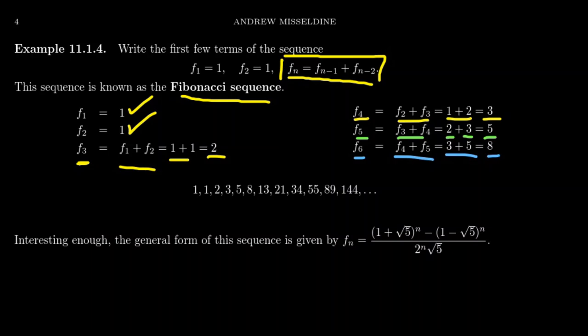We can very quickly determine the next term in the Fibonacci sequence just by adding the two previous terms. This is one of the most famous sequences and it is recursive. The Fibonacci sequence shows up in art and nature because of its connections with the golden ratio, which has a kind of cult following we won't get into right now.